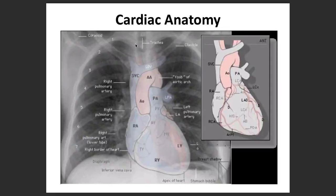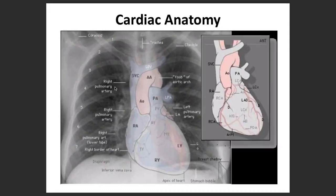You should be able to see the trachea, the clavicle, and also the different areas of the heart. You will be able to appreciate, for example, the breast or mammary shadow, stomach bubble, apex of the heart, left pulmonary artery, the knob of the aortic arch, unfolding of the aorta, and the pulmonary artery branches on the right side, among several other structures.